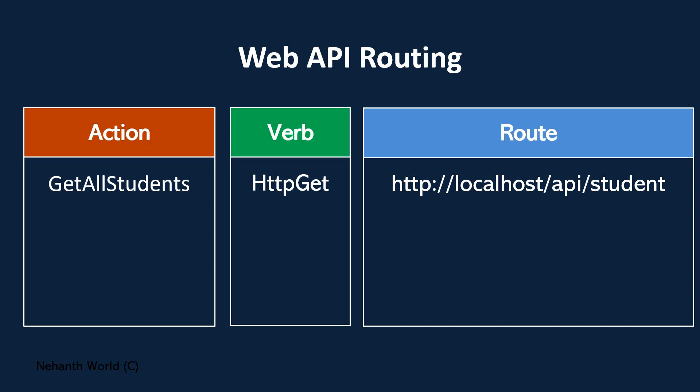To execute this action, we need to call this URI from the browser. The URI is basically localhost as the server, and 'api/student' is the URI — that's the full URL. If you run this URL in a browser with the HTTP GET verb, then only this method will get triggered. So to trigger the 'Get All Students' action, we need to combine the verb and the route and call it.